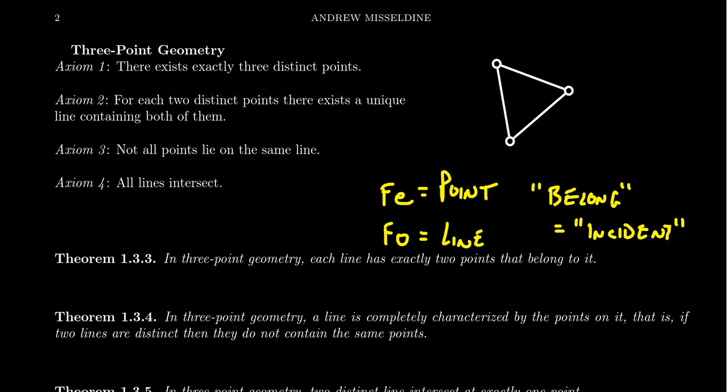Axiom two of Fee-Foe theory told us that any two distinct Fee's belong to exactly one Foe. If we rebrand that using geometric terms, that becomes the sentence: for each two distinct points, there exists a unique line containing both of them. Again, slightly different phrasing, but it means the exact same thing. We had the two Fee's, which are now points, and they're incident to exactly one Foe, which is now called a line.